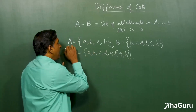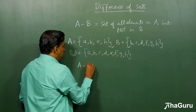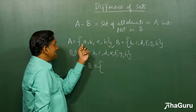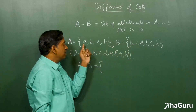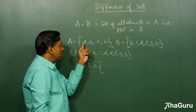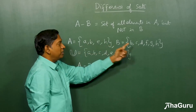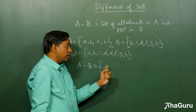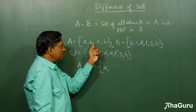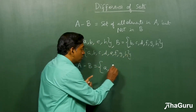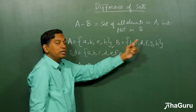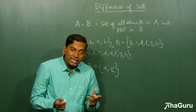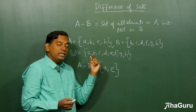Let's find A minus B. A minus B is the set of elements in A but not in B. Small a is in A but not in B, so we include it. Small b is in both, so we can't include it. Small e is in A but not in B, so we include it. h is in both, so we can't include it. So A minus B is simply the set {a, e}.